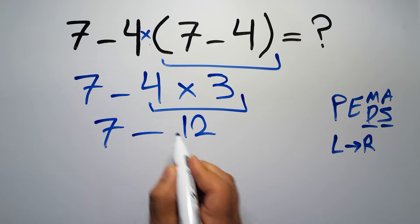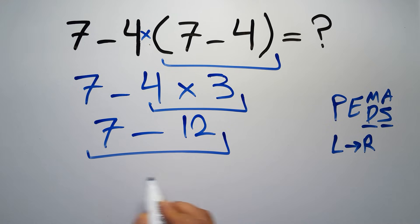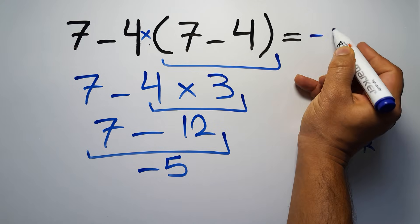So 7 minus 12, which equals negative 5. And this is our final answer to this problem. The correct answer is negative 5.